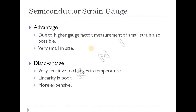Due to the higher gauge factor, measurement of small strains is also possible. Semiconductor strain gauges are very small in size and have high sensitivity. However, disadvantages include being very sensitive to changes in temperature, having poor linearity, and being more expensive than other types.